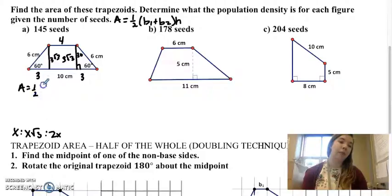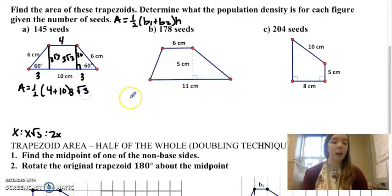I have one half, 4 plus 10, because those are my two base lengths, times 3 root 3. And again, we're going to work with exact numbers for the most part, unless we have to use sine, cosine, or tangent. We're going to use exact form.